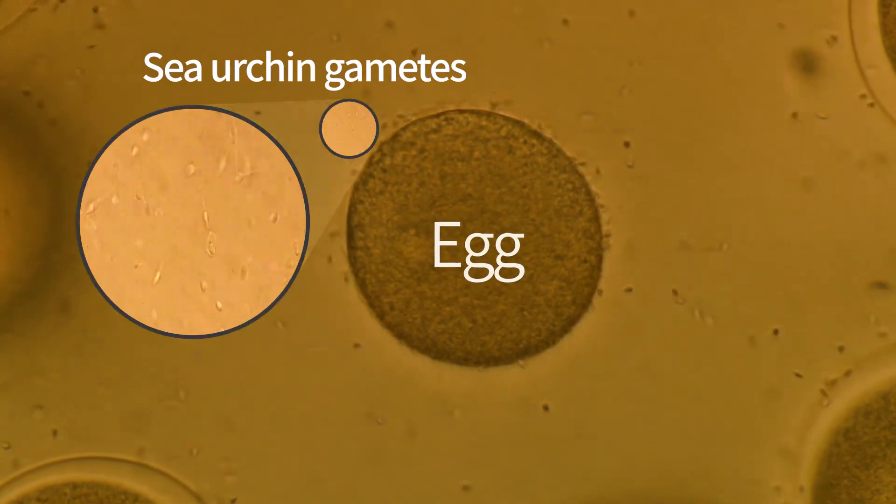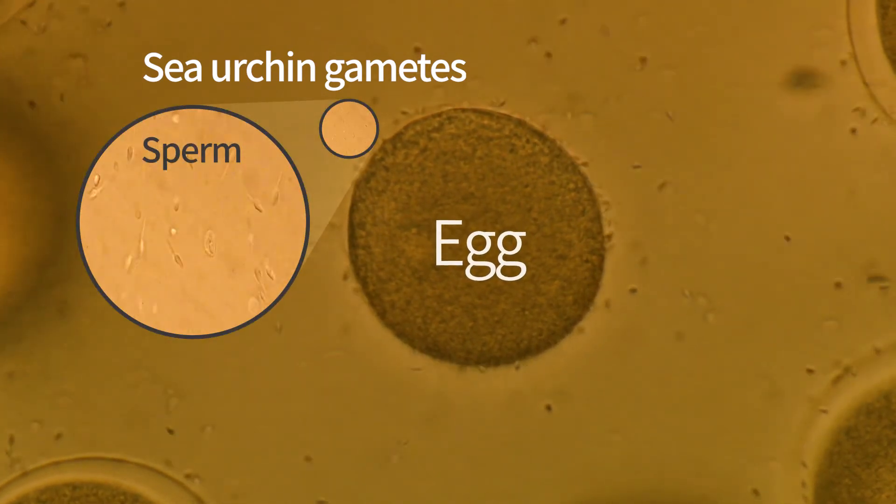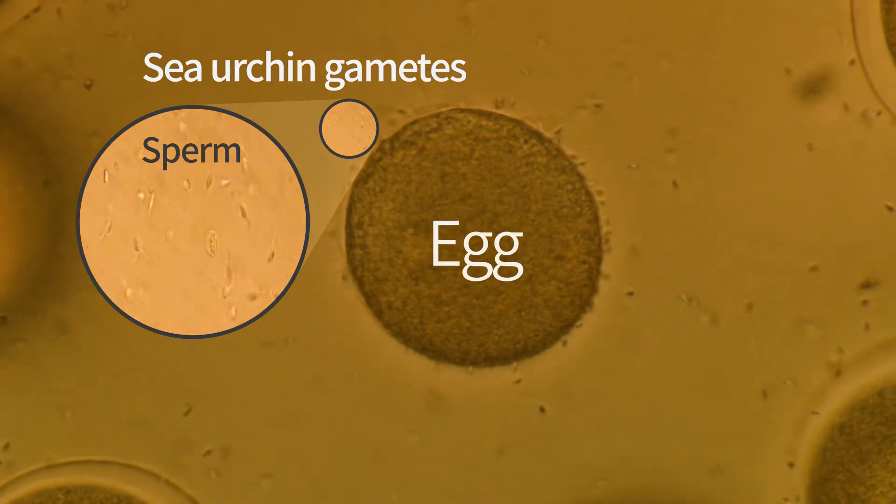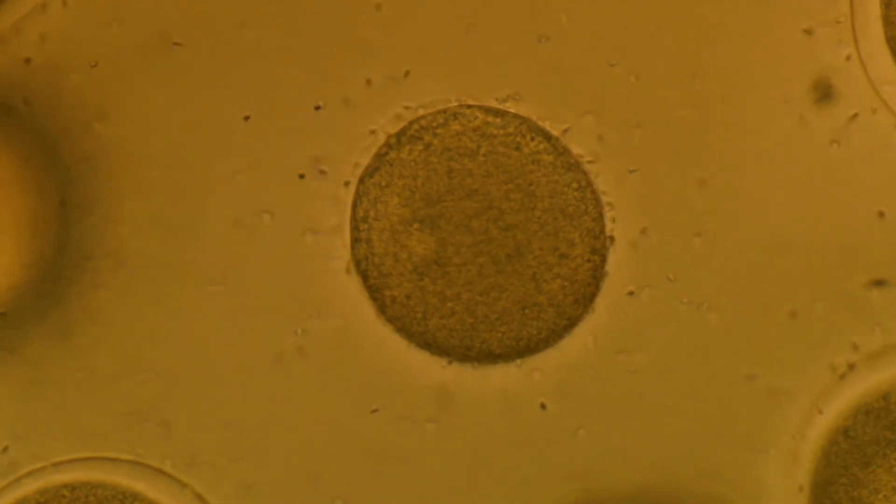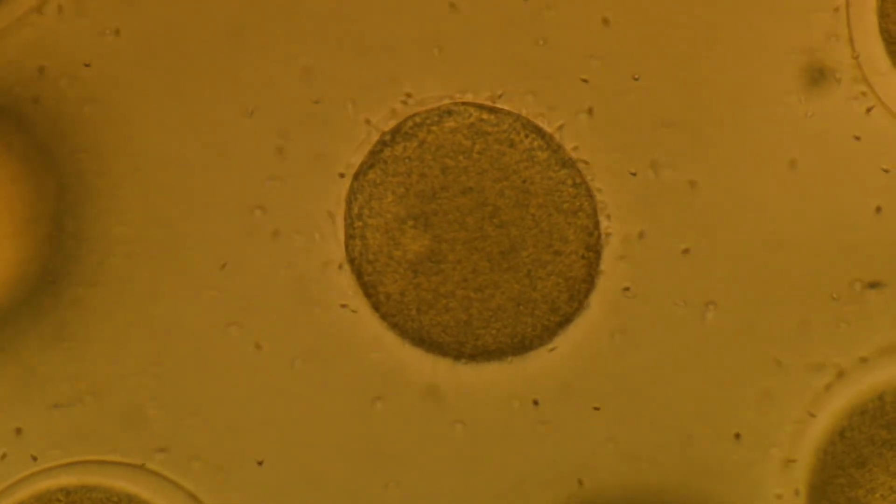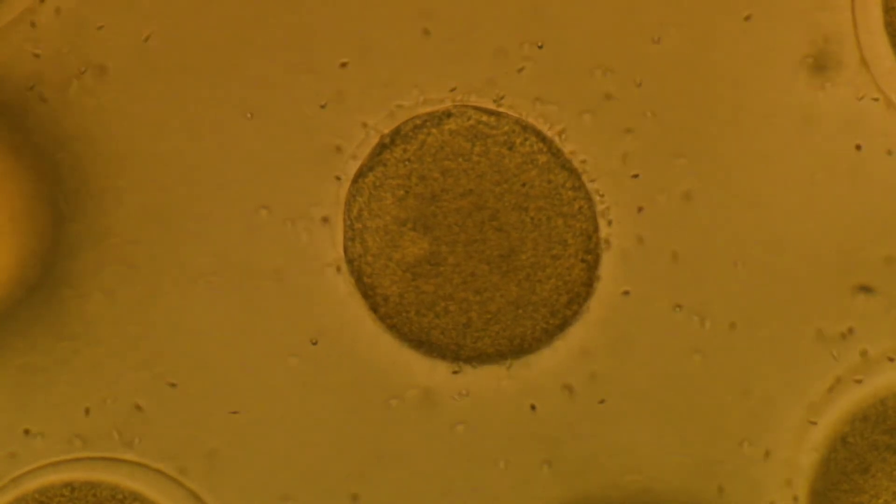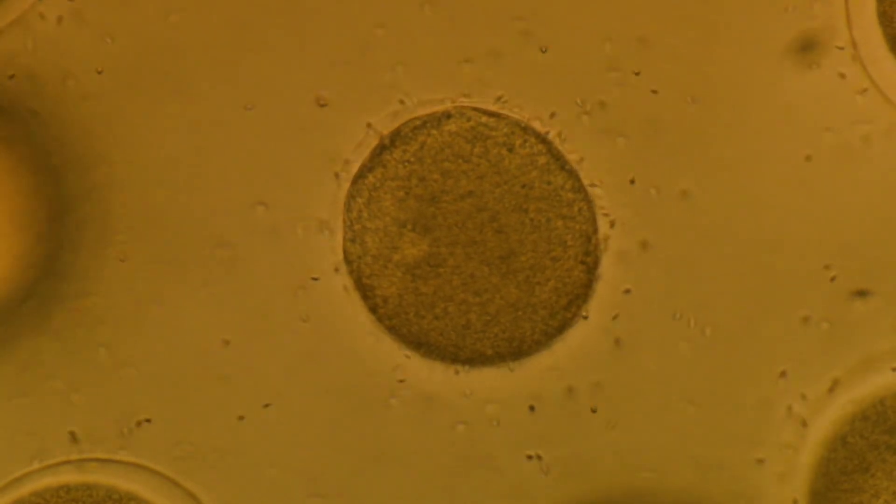The second sex produces plenty of tiny, highly motile gametes. We call this sex males and its gametes sperm. The female produces a small number of eggs. The male produces a huge number of sperm cells.